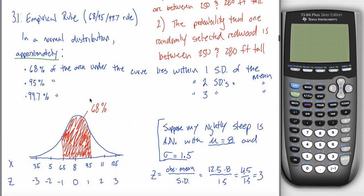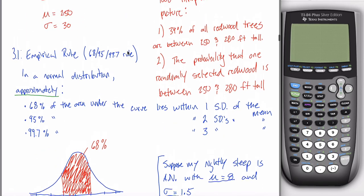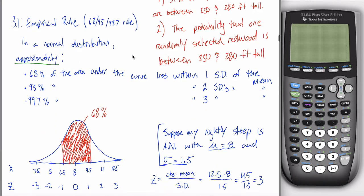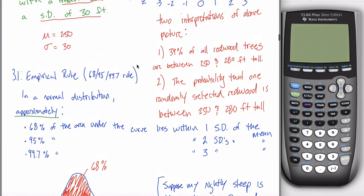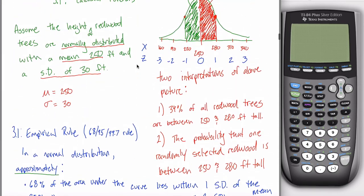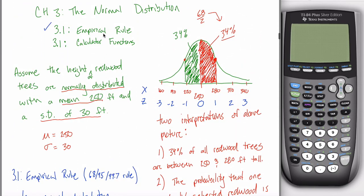That might beg the question: if the calculator is so much better, why did we learn the empirical rule? The short answer is that if you just start with the calculator functions, they don't have any meaning — it's that black-box idea where you memorize what you put in and what comes out but don't understand any of it. Every intro-to-statistics class starts with the empirical rule, then moves on to calculator functions.